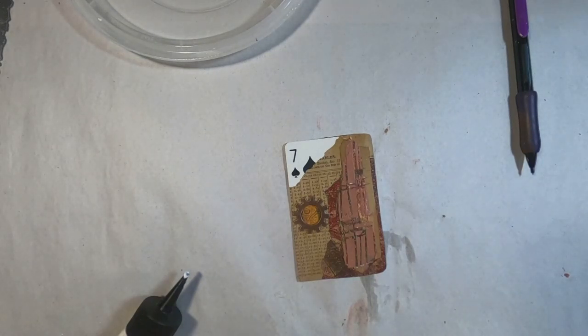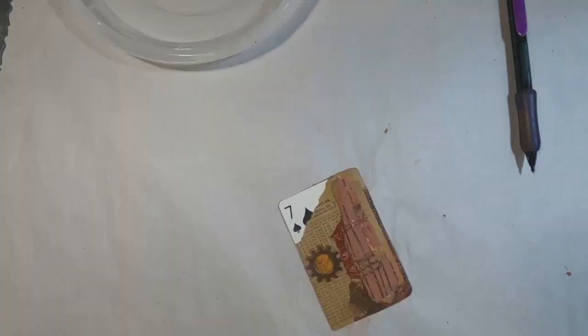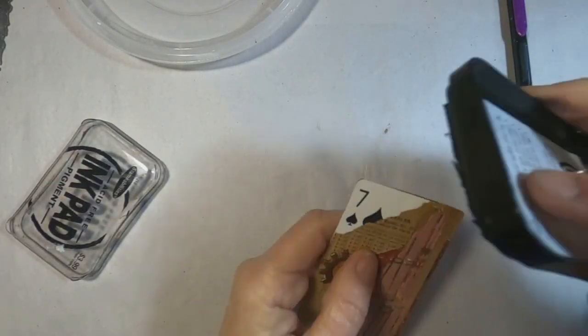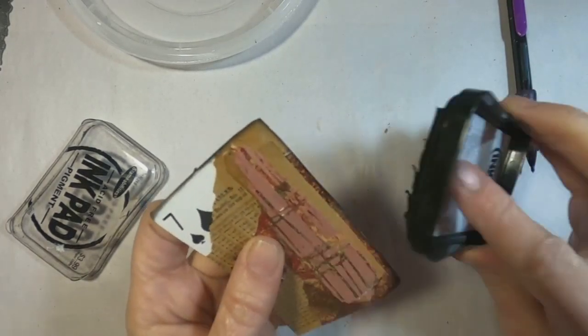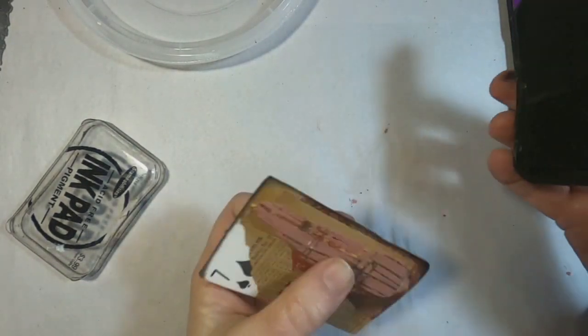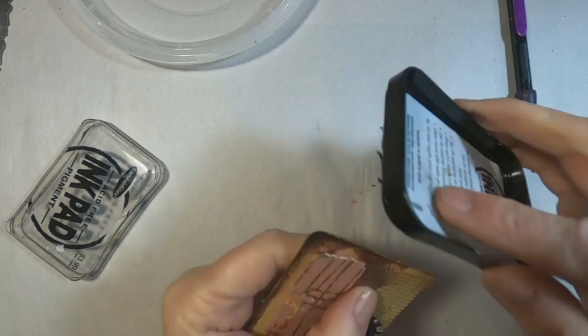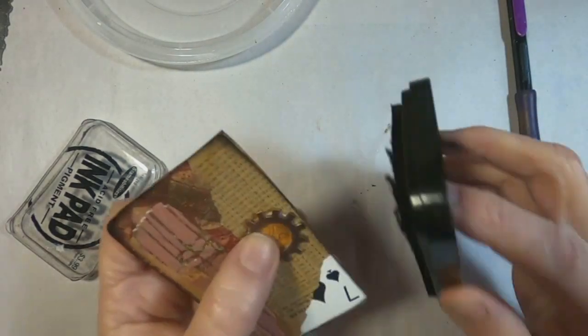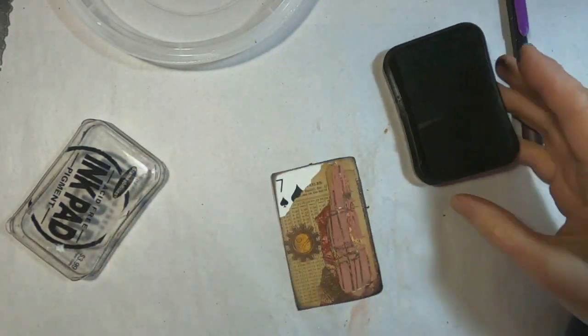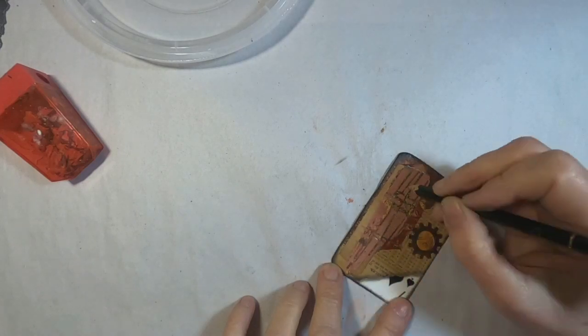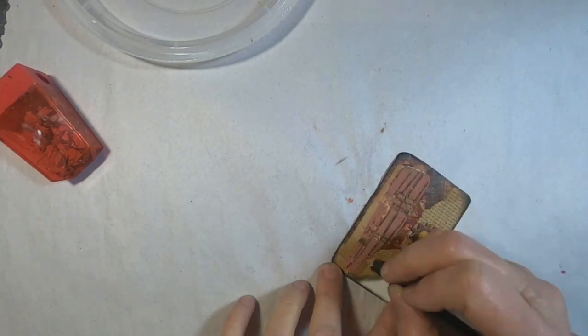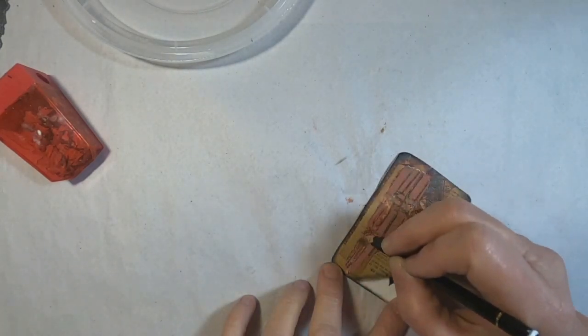And while I'm waiting for that texture paste to completely cure, I'm going to take a moment and go around the outside edge of the card with this black Stazon ink or black ink. And it just kind of frames it in.